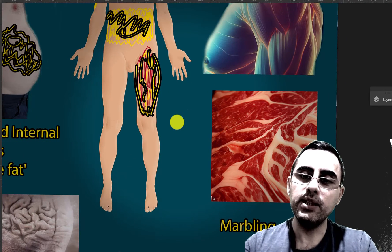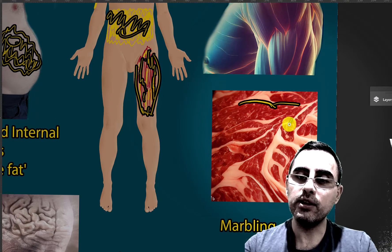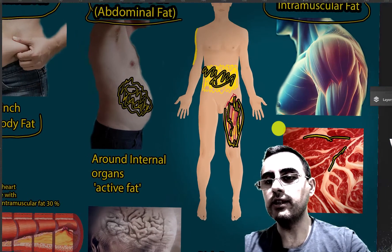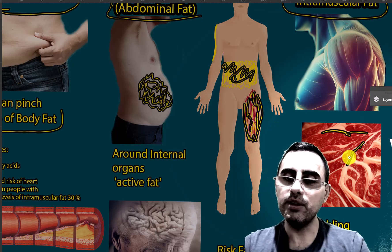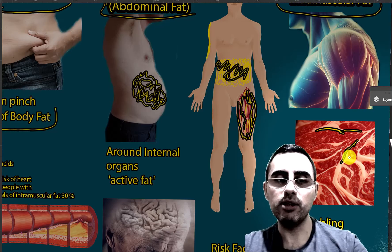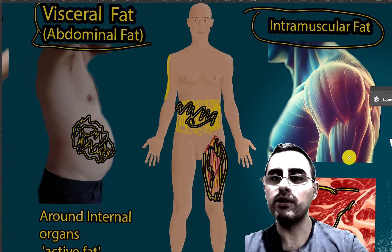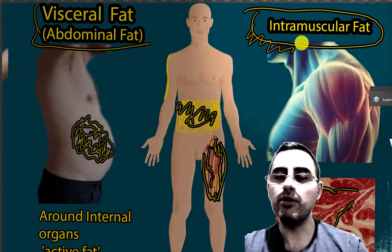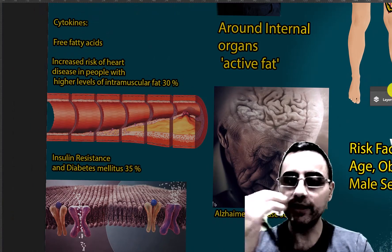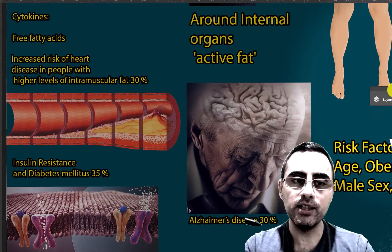Intramuscular fat is also known as marbling in meat cuts — you can see the white parts in the meat. In beef and other mammals it can be seen as marbling, but not in humans because in humans this fat deposition is microscopic. Intramuscular fat is important because it plays an important role in the development of several diseases as an independent risk factor.